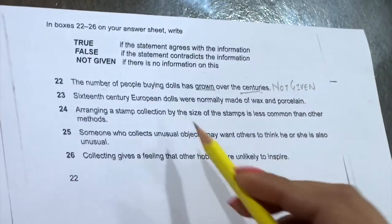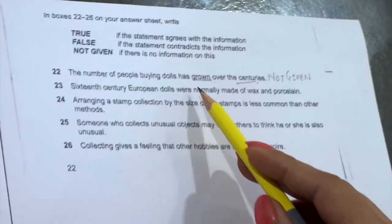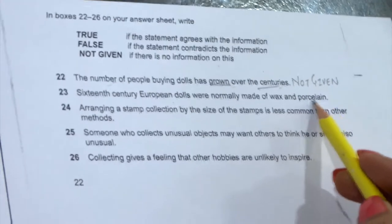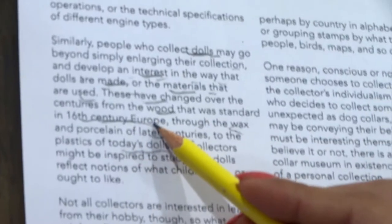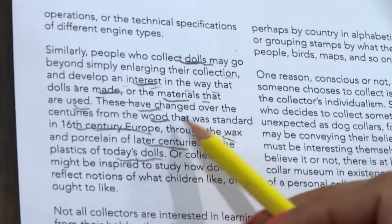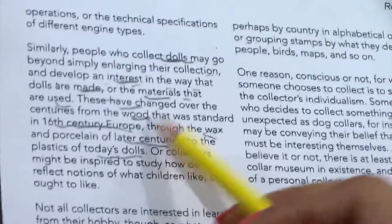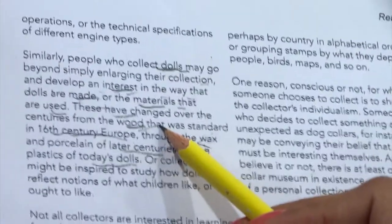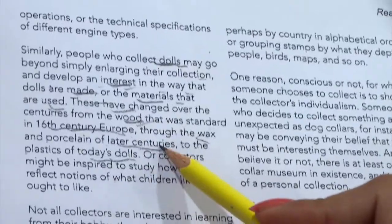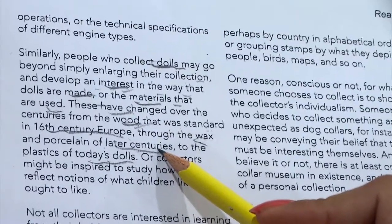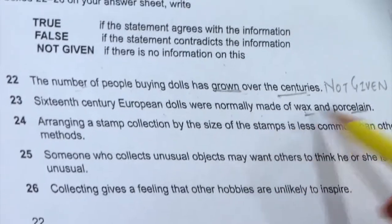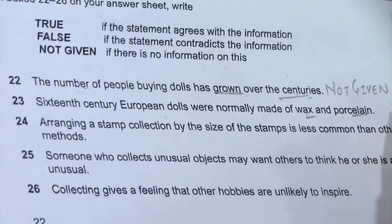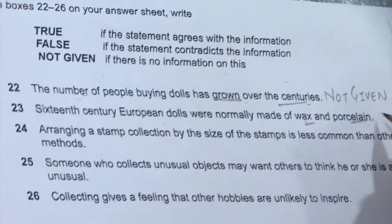Next, question 23: '16th century European dolls were normally made of wax and porcelain.' We go to the same location since we already know they were talking about 16th century Europe. The passage says: 'These have changed over the centuries from the wood that was standard in 16th century Europe, through the wax and porcelain of later centuries.' That means in the 16th century, wood was used — but the question states wax and porcelain, which is the opposite of the passage. So the answer will be FALSE.